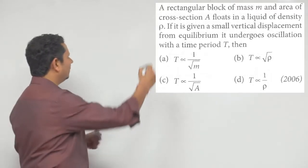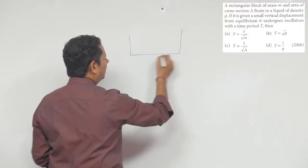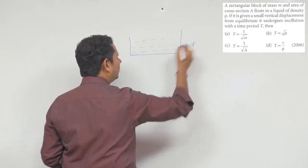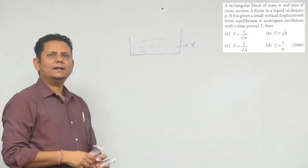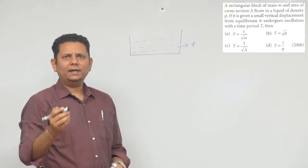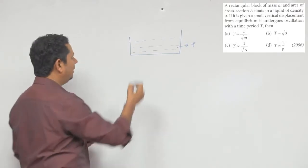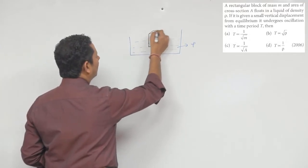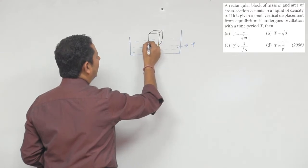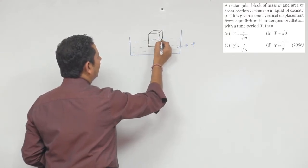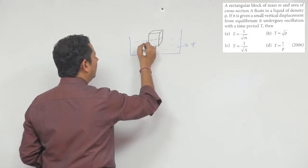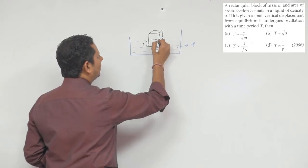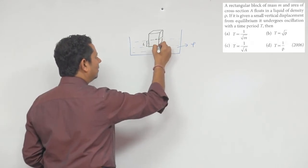So the question is: if you have a pan or container with a liquid of density rho, this is the scenario we are working with.